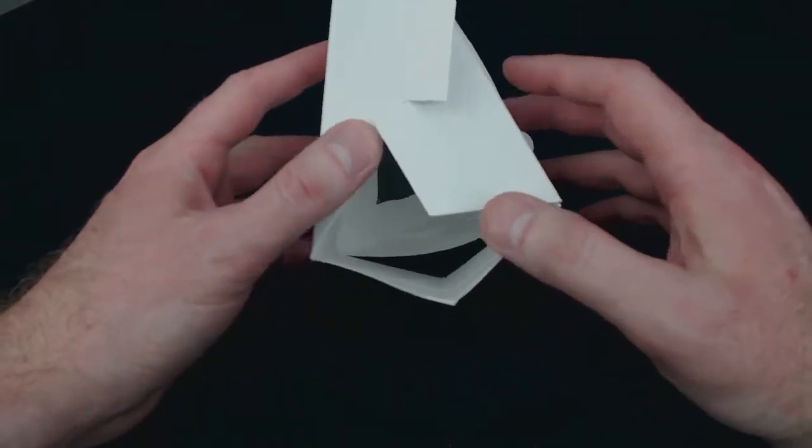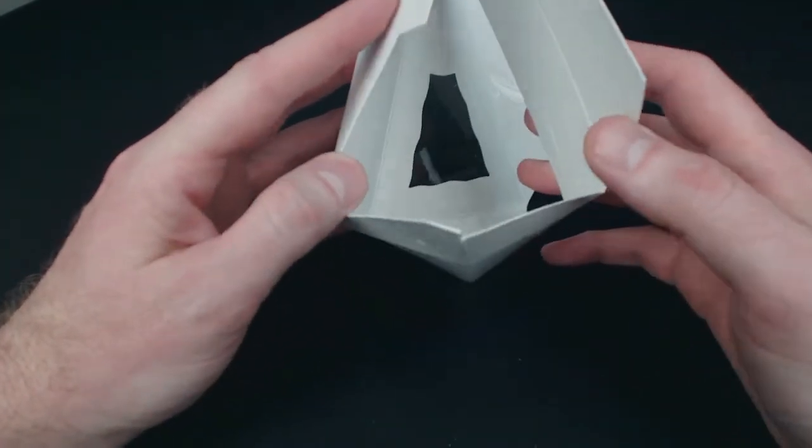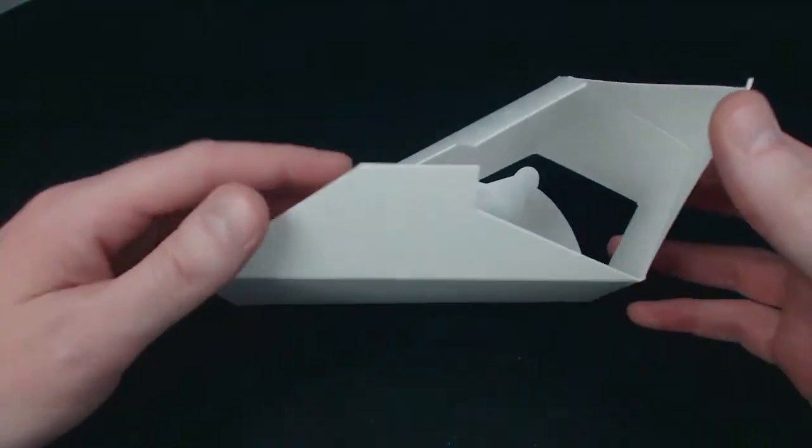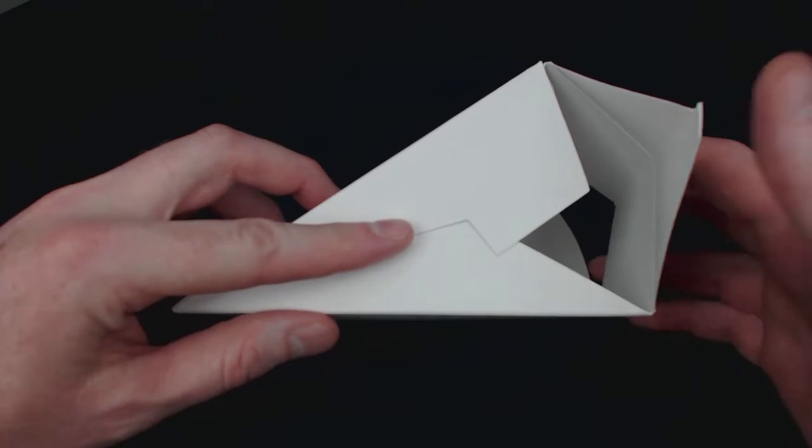And you'll notice that these panels are numbered. Those numbers correspond to the order in which we want to fold them in to finish the bottom of the box. So number one is first, number two is second, number three,